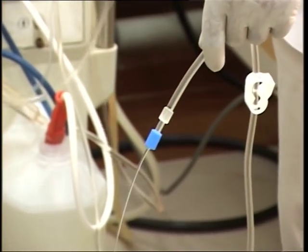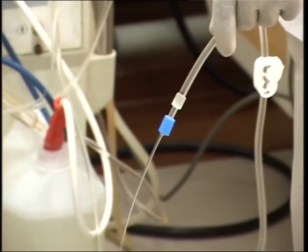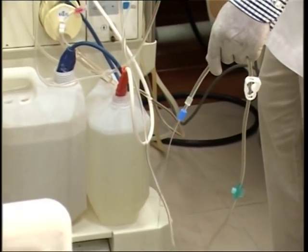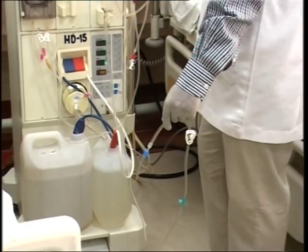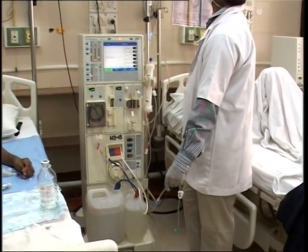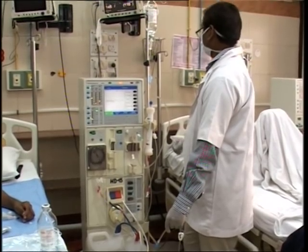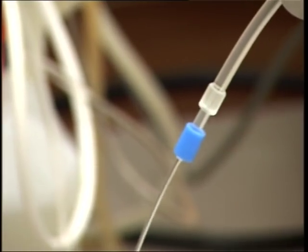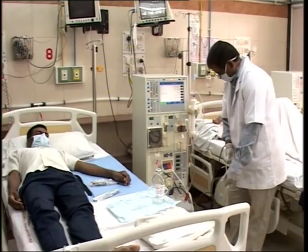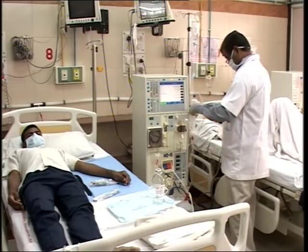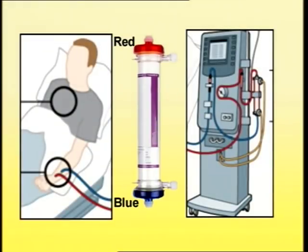At this point, it should be noted that the dialyser is inverted so that the venous end — the blue end — is on top, and it is gently agitated to remove all the air trapped in the circuit. Once the procedure is complete, the dialyser is again placed on the holder with the arterial end, the red end, up.